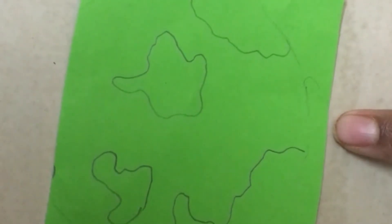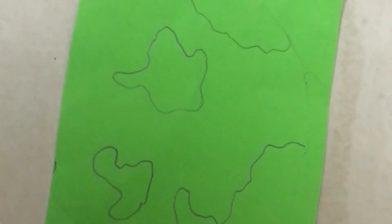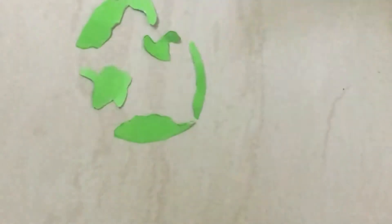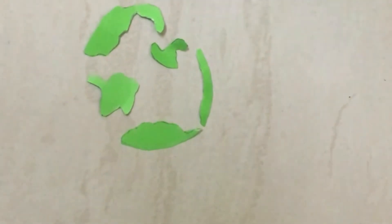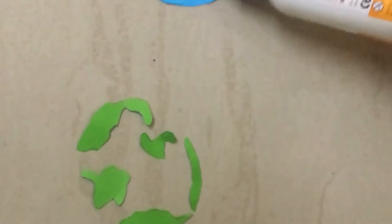Now draw like this, something like continents for the blue one. It's like Earth. Now glue the continents on the blue circle.